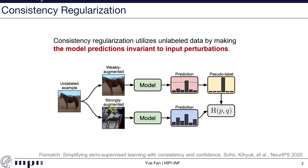Here we show a consistency regularization-based method called FixMatch. Given an input unlabeled image, we apply data augmentation twice — once with weak augmentation and once with strong augmentation. The weakly augmented image is fed into the model to get a prediction, from which we compute the pseudo-label. In the second branch, the strongly augmented image is fed into the same model to compute the cross-entropy loss with that pseudo-label. Together with the standard cross-entropy loss on the labeled dataset, this method achieves very good performance.